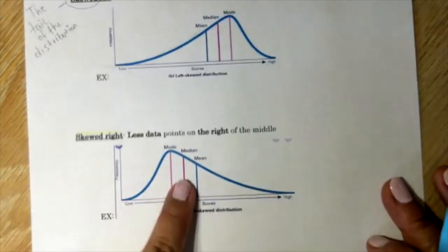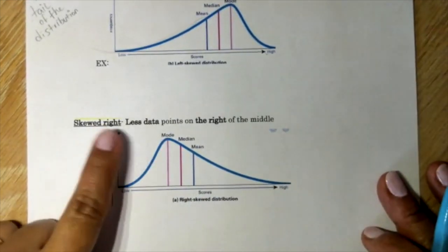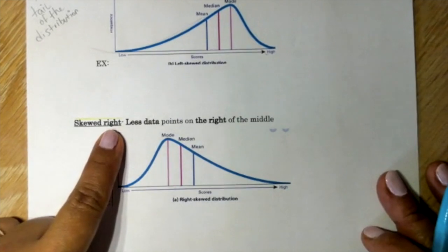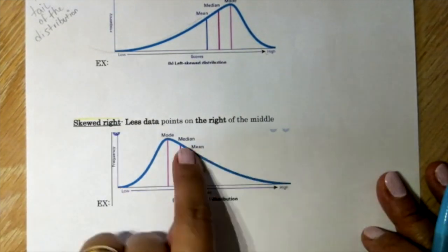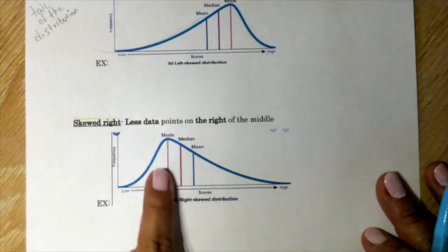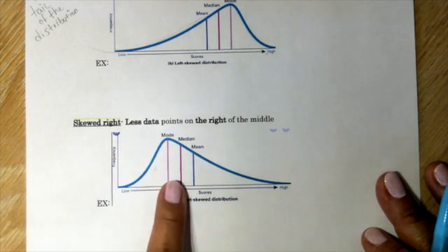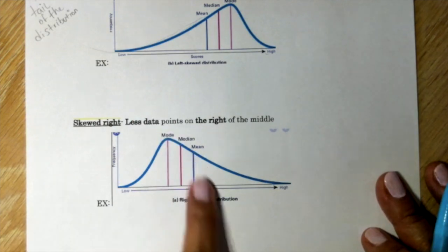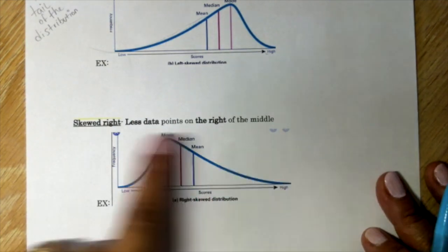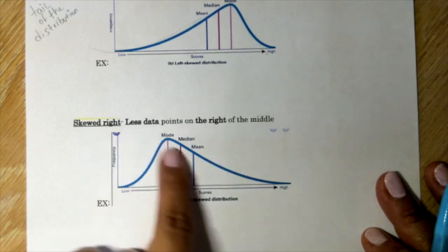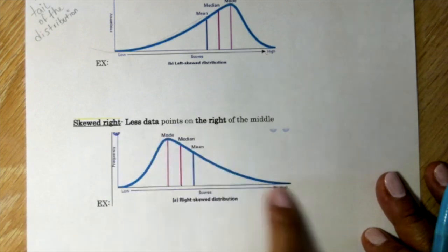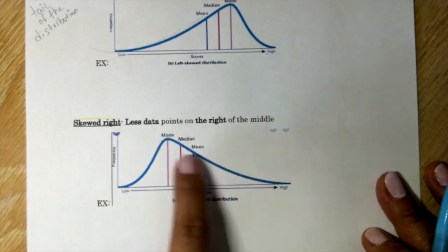And then here, skewed right, less data points on the right of the middle. So the points are here, that's the mode, the number that's repeating the most, median, the mean, but then we describe it as skewed right, which is less points on the right of the middle.